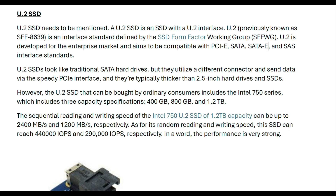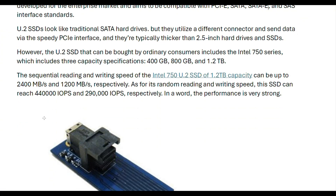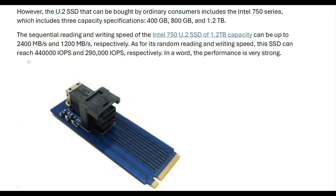U.2 SSDs resemble traditional SATA hardware but use different connectors and send data at PCIe interface speeds. They are typically thicker than 2.5-inch hard drives and SSDs. SSDs available to ordinary consumers include the Intel 750 series, which comes in three capacity specifications: 400 GB, 800 GB, and 1.2 TB.